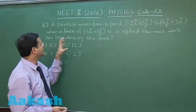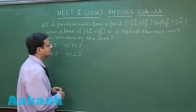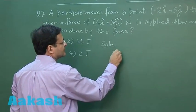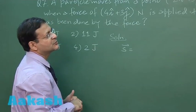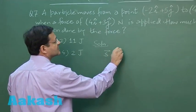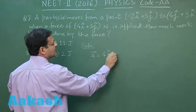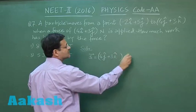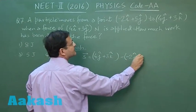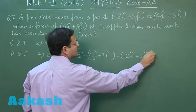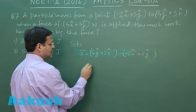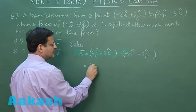So how much work is done? First you have to calculate the displacement. For displacement, final position vector minus initial position vector you will have to do. This is 4j cap + 3k cap minus this: -2i cap + 5j cap. So you will see that i cap is not here, so 0 minus -2i, so that will become 2i cap.